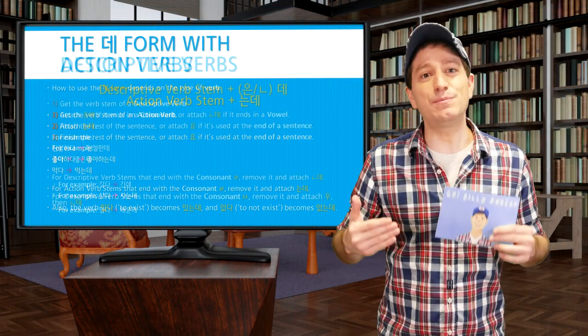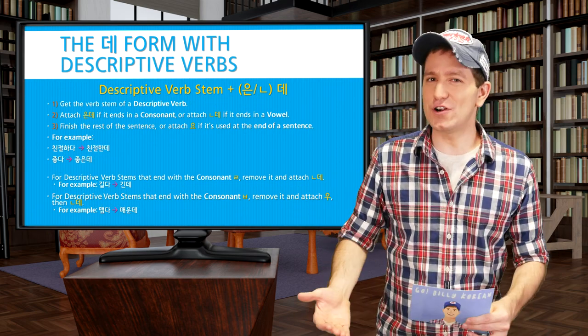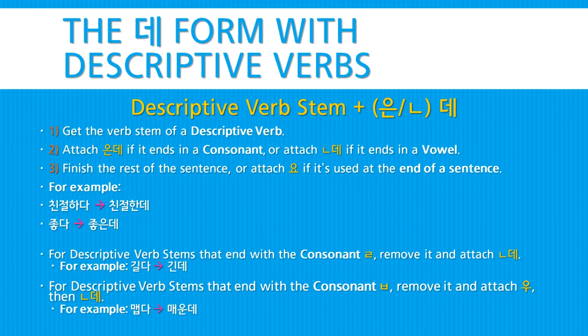The 데 form works a little differently with descriptive verbs. First get the verb stem of a descriptive verb, then attach 은데 if it ends in a consonant, or attach ㄴ데 if it ends in a vowel. For example, 친절하다 becomes 친절한데, and 좋다 becomes 좋은데. For descriptive verb stems ending in ㄹ, remove it and attach ㄴ데, so 길다 becomes 긴데. For stems ending in ㅂ, remove it and attach 우ㄴ데, so 맵다 becomes 매운데.